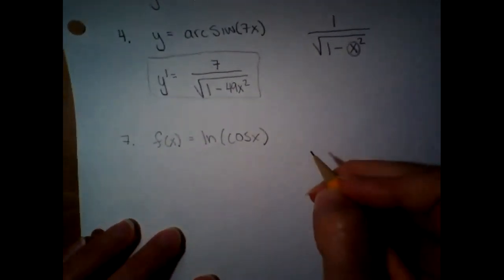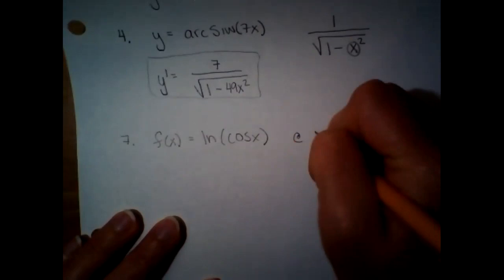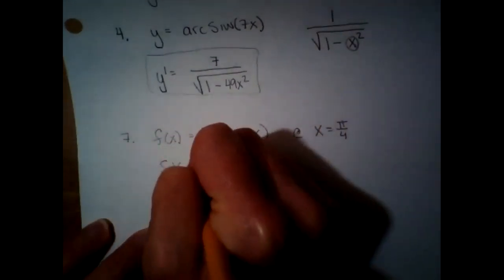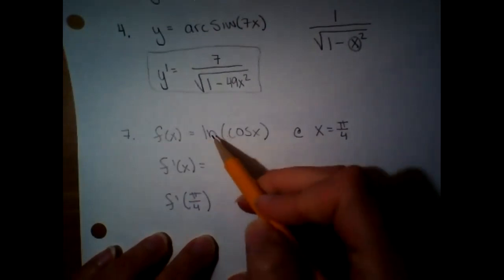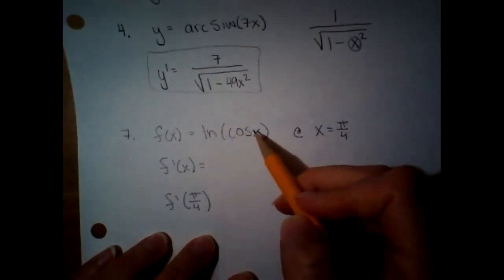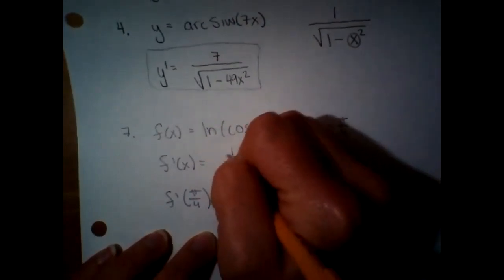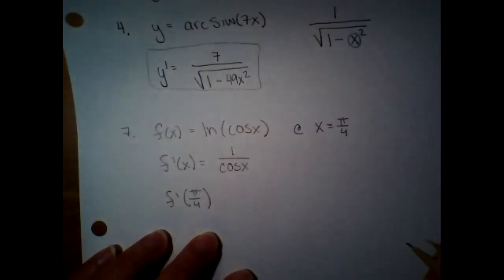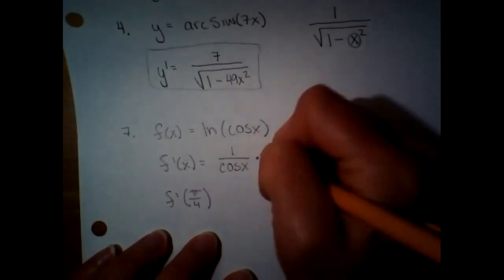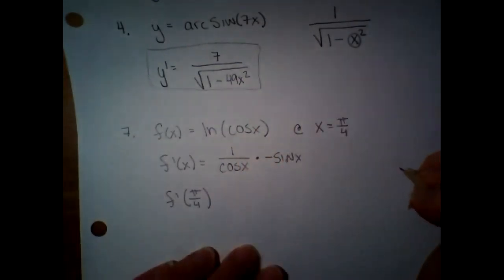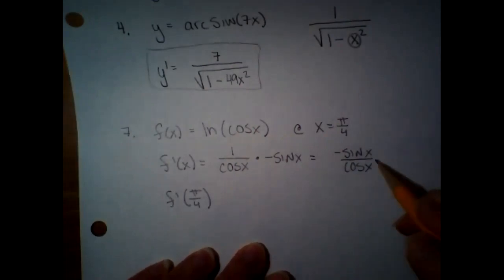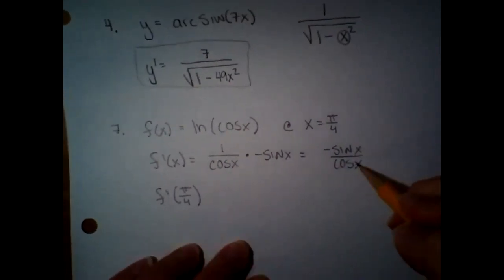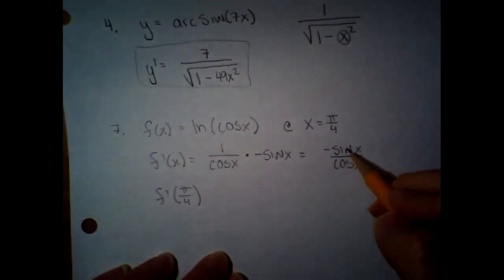Number seven asks for the instantaneous rate of change, which means the derivative at π/4. This derivative is a chain rule: ln is the outside function, cosine is the inside function. Derivative of ln is rational, so that gives 1 over cosine(x), then chain on the derivative of cosine, which is negative sine. Rewriting: negative sine(x) over cosine(x). Some people even simplified further to negative tangent of x, since sine over cosine is tangent.